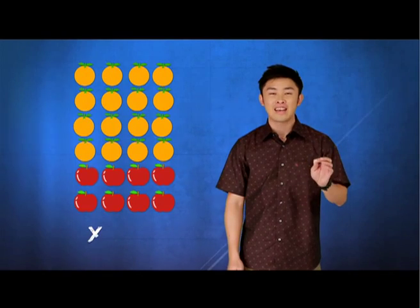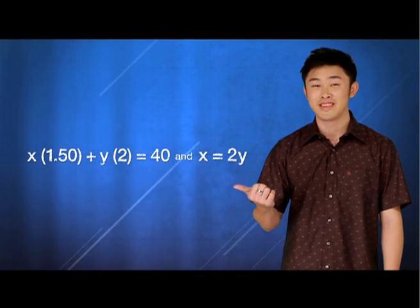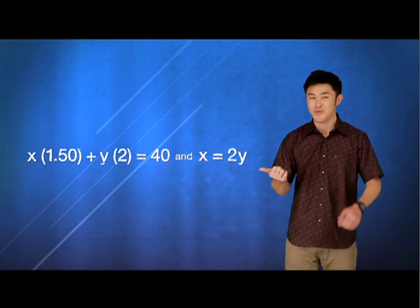To solve equations with two unknowns, we will need another equation with the same unknowns. What if I say that the number of oranges is double the number of apples? Then we will have another equation of X equals 2Y. Now I have two equations with two unknowns, and this will allow me to solve the value of X and Y.